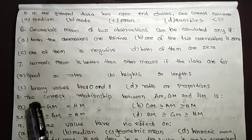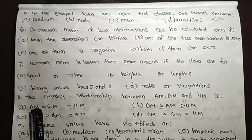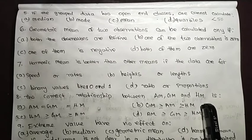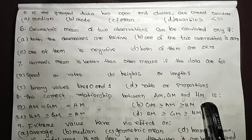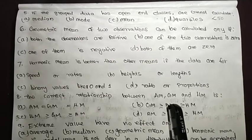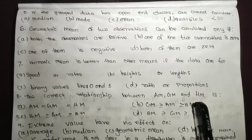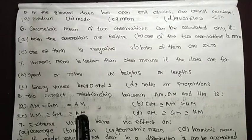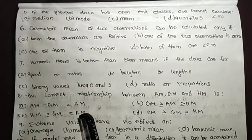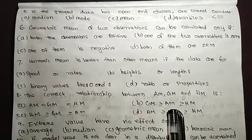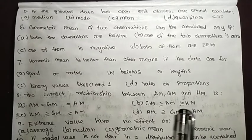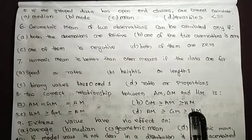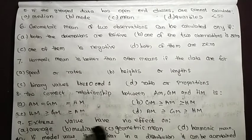Question 8: The correct relationship between AM, GM, and HM. The standard mathematical relationship is AM ≥ GM ≥ HM.